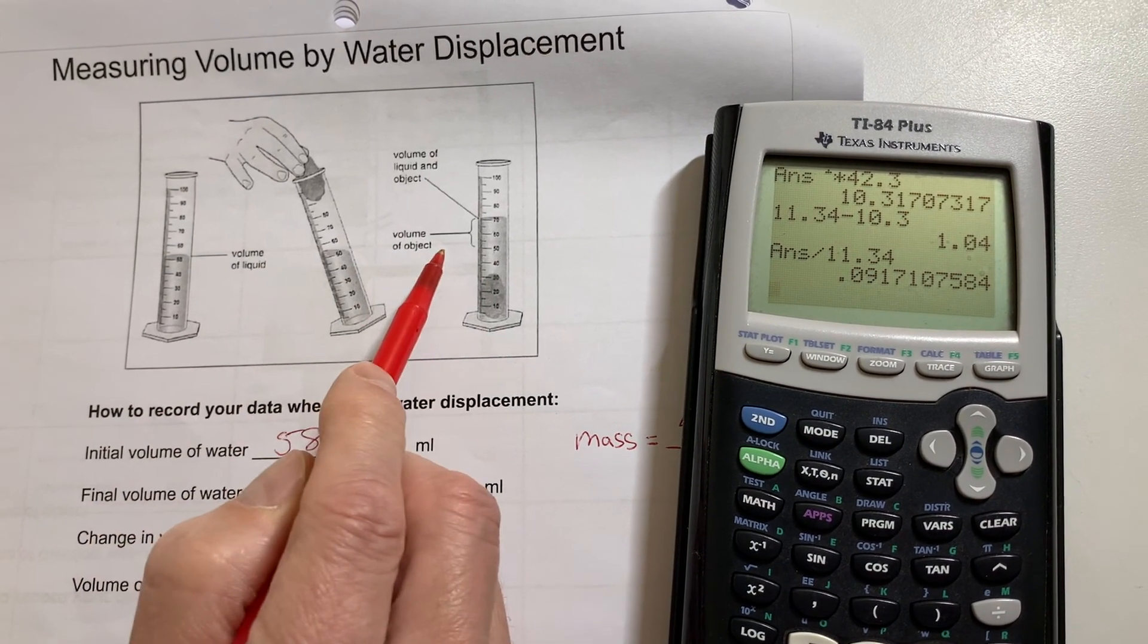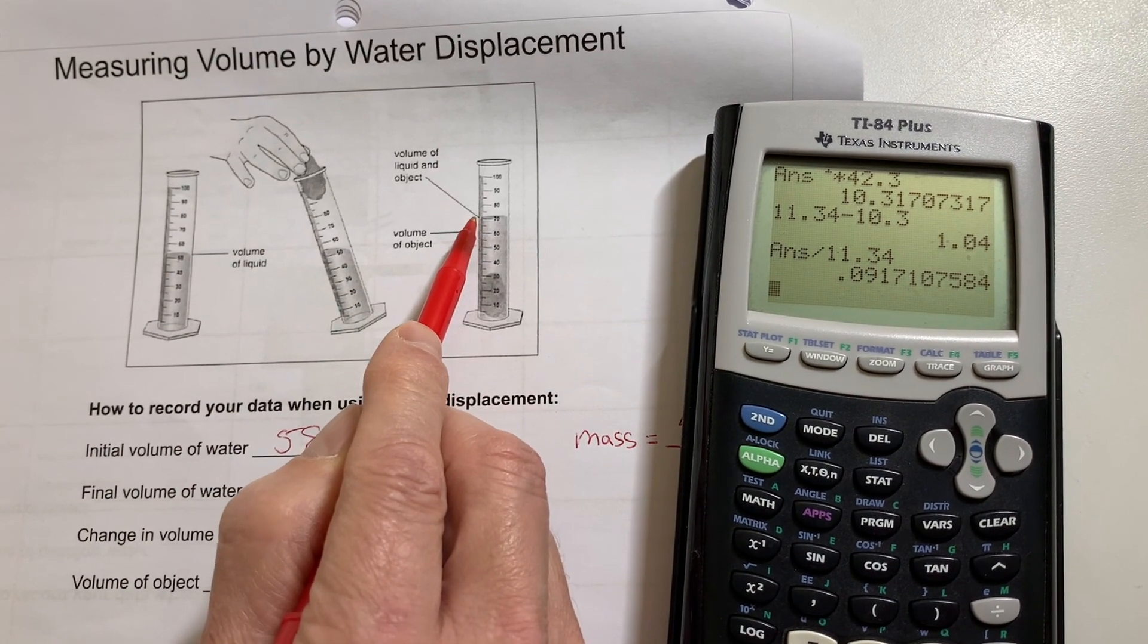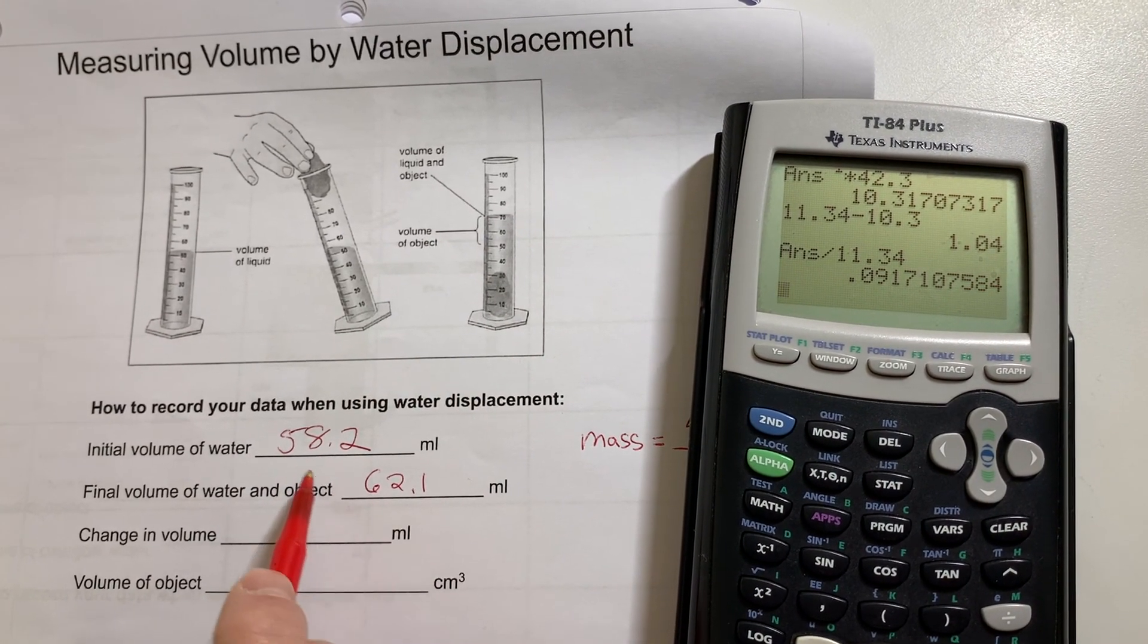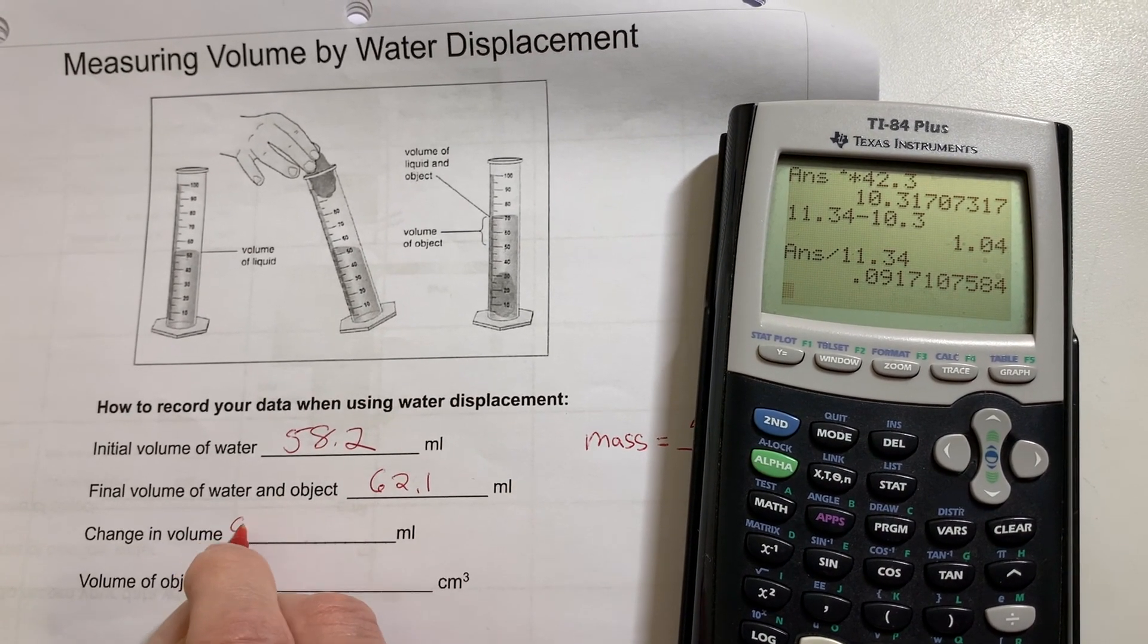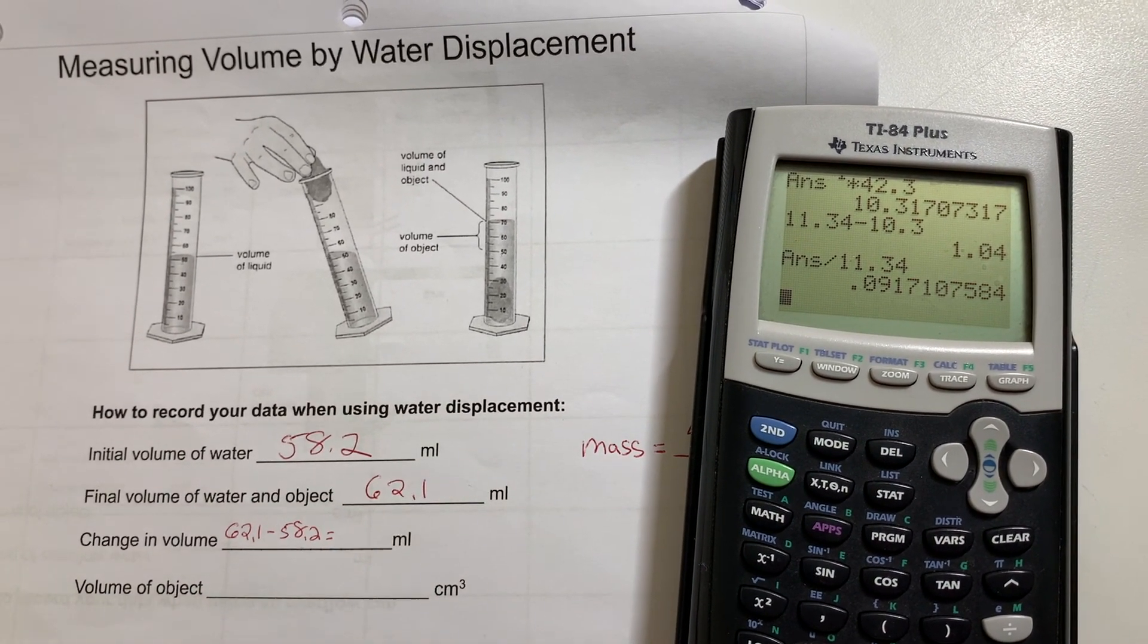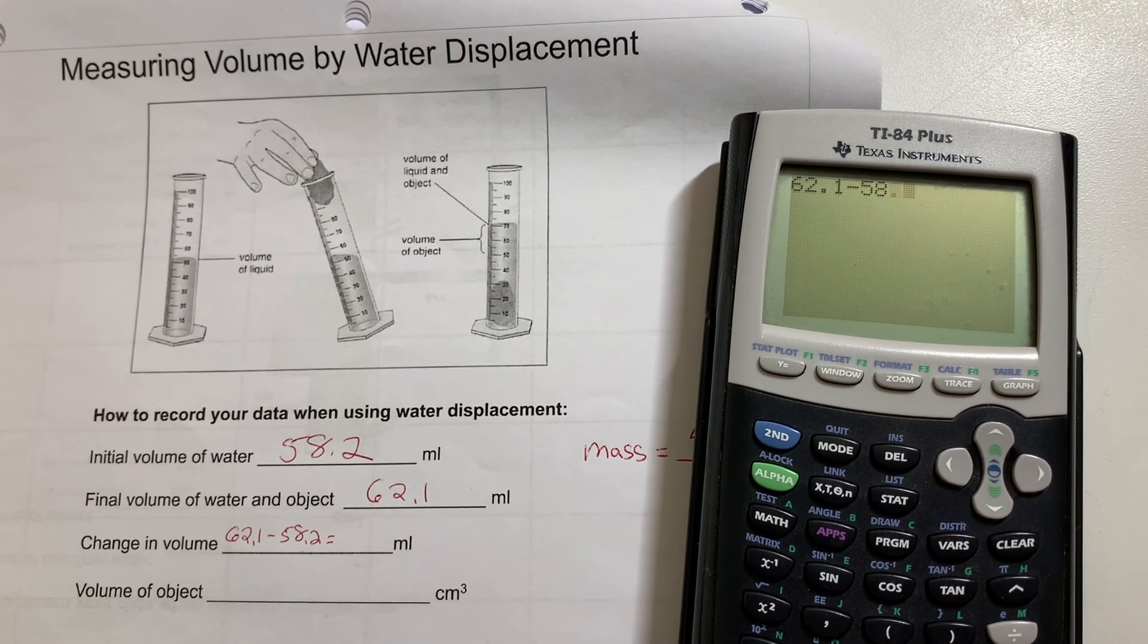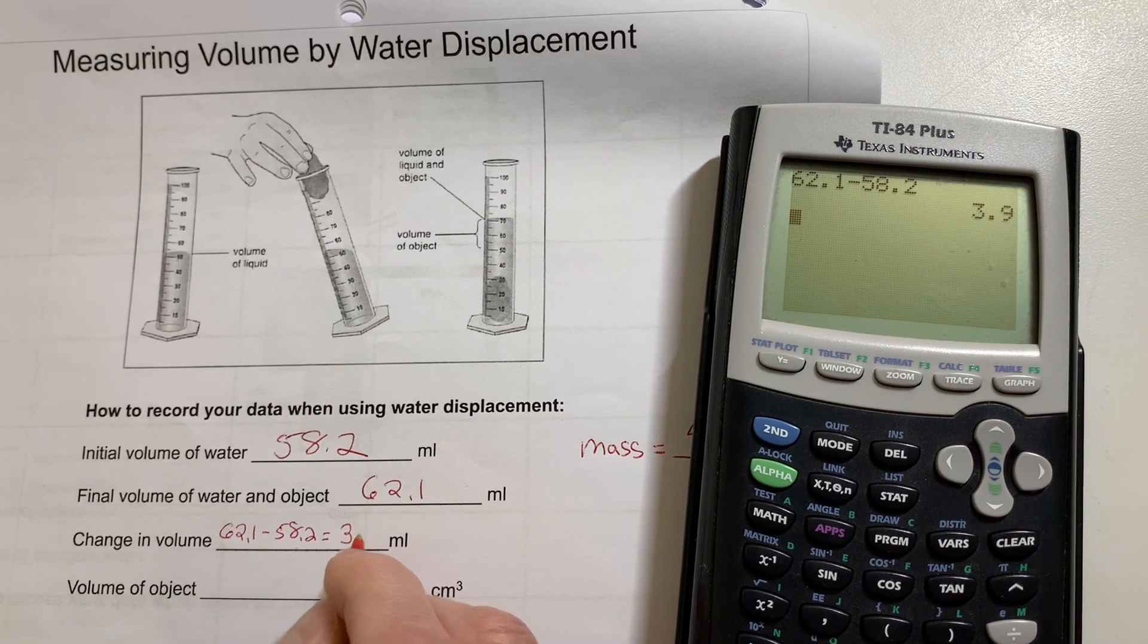So ultimately what happened here is that the water level started at one level and it went up to a higher level. And it's that difference that represents the volume of the object. So to find out how much the water level went up, I'm going to subtract. So I'll go 62.1 minus 58.2. I'll not trust myself and do it on the calculator. And I get 3.9 milliliters.